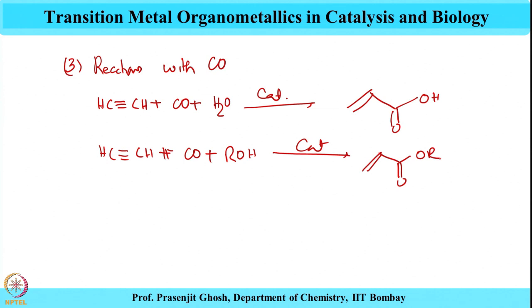We discussed these three types of reactions in great detail, observing that they all required intervention of a catalyst and proceed via formation of organometallic species. The catalysts used often involved nickel, copper, mercury, iron, and ruthenium. These products are useful as monomers for various polymerization reactions and are therefore highly sought after in industry.